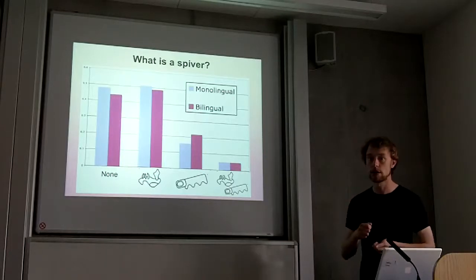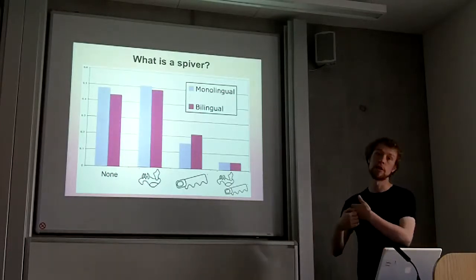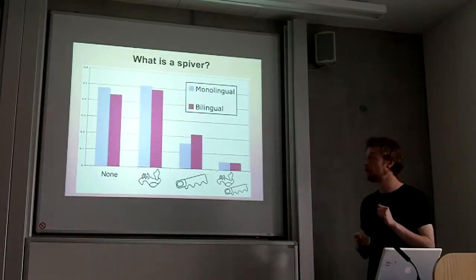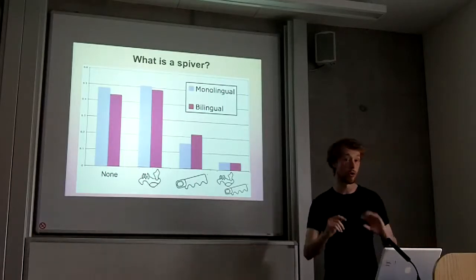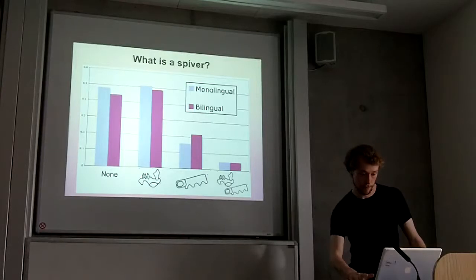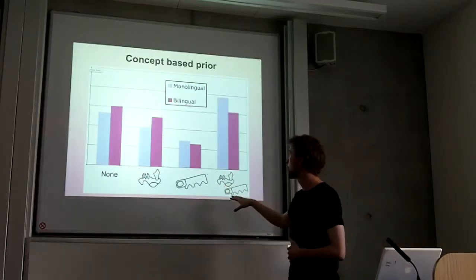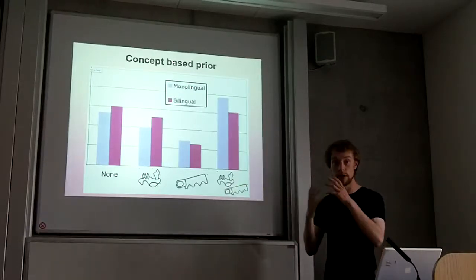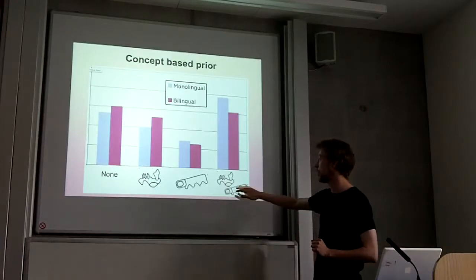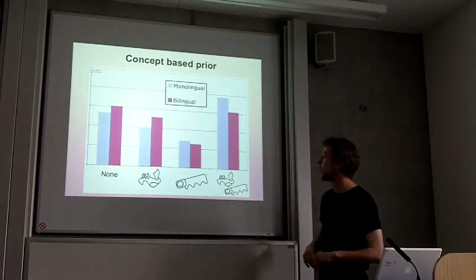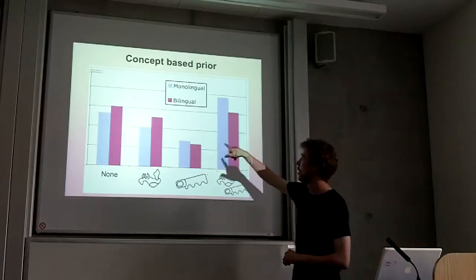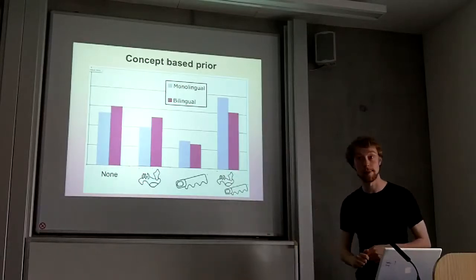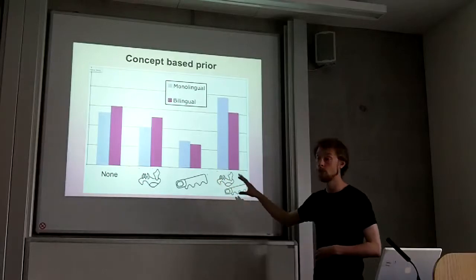But perhaps this is a result of the model preferring smaller lexicons. Obviously, bilinguals have larger lexicons. So what happens if we change that bias so that the model prefers smaller concept sets, which are more equal for monolinguals and bilinguals? Here's what happens: the order of things changes again. Now, for some reason, it prefers to pair the word it hasn't heard with the object it hasn't seen, and then the object it has seen. But again, although the bilingual corpus seems to be slightly more ambivalent, it's qualitatively exactly the same.